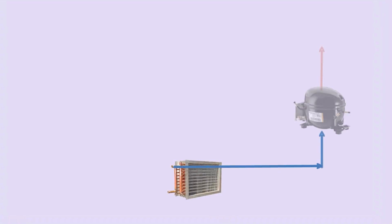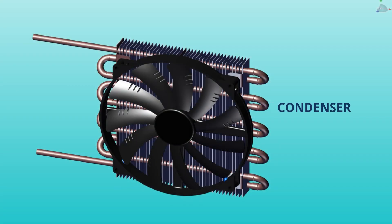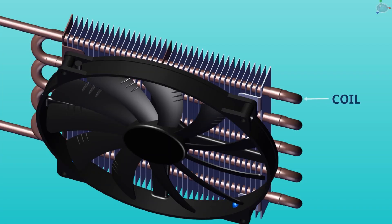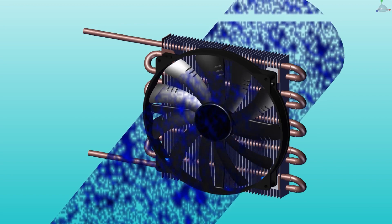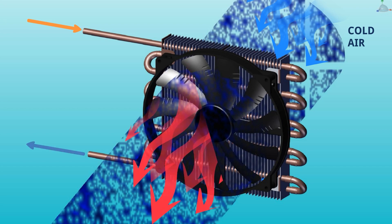The third part of the refrigeration cycle is the condenser. It is basically a heat exchanger coil — normally made of copper or sometimes aluminum. It has fins, normally made of aluminum or copper, and a fan which circulates air through this cooling coil. The condenser takes in fresh cold air, and as the hot refrigerant comes into the coil, there is heat exchange between the refrigerant and the air — the air becomes hot and the refrigerant becomes cold.